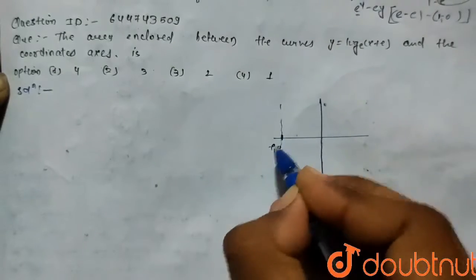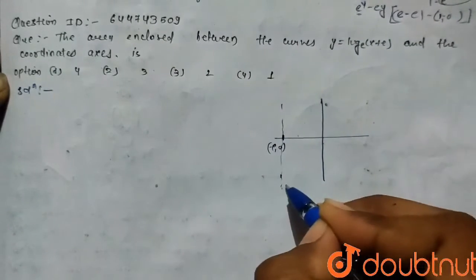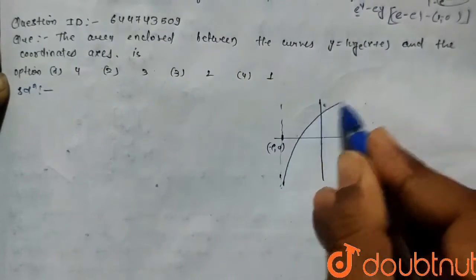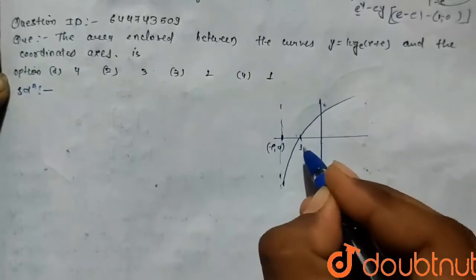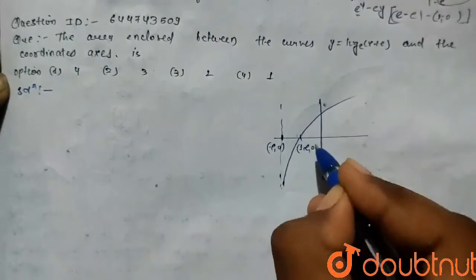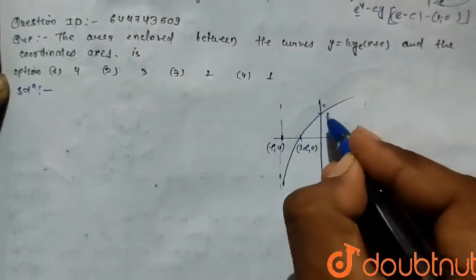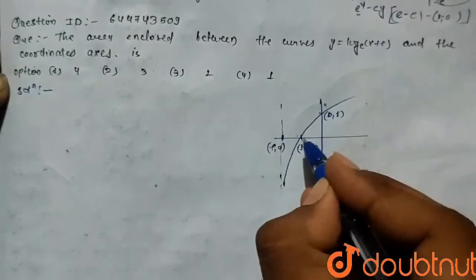at (-e, 0) going to infinity, and this is the graph. This point is (1-e, 0) and this point is (0, 1). So we have to find this area. We'll find this area using the y-axis. We're given that y equals log of